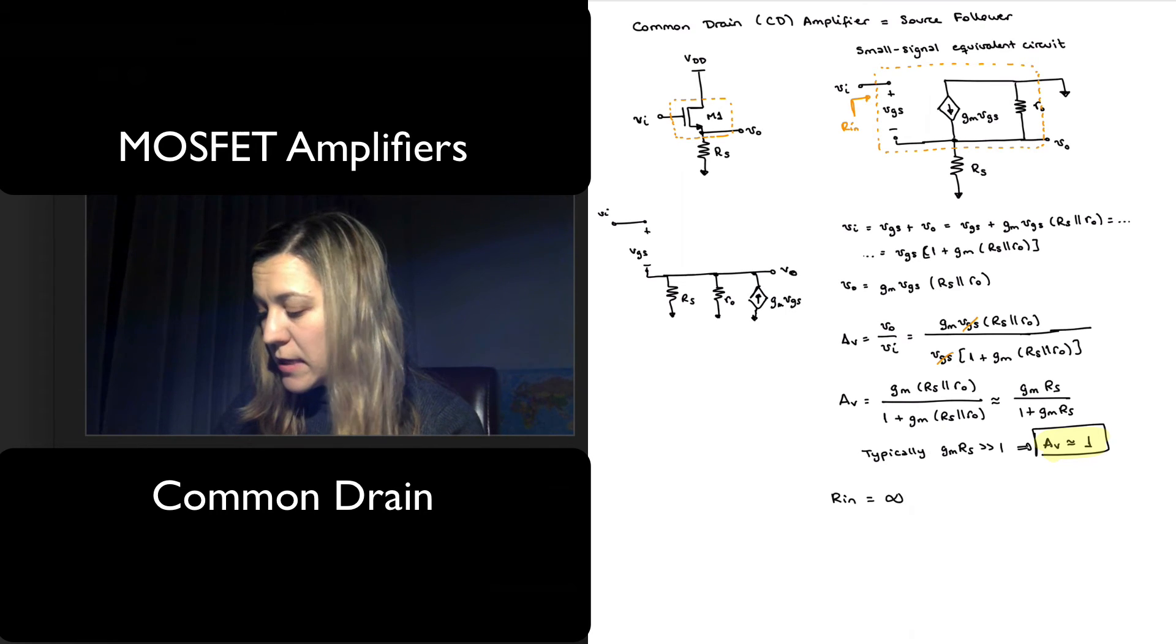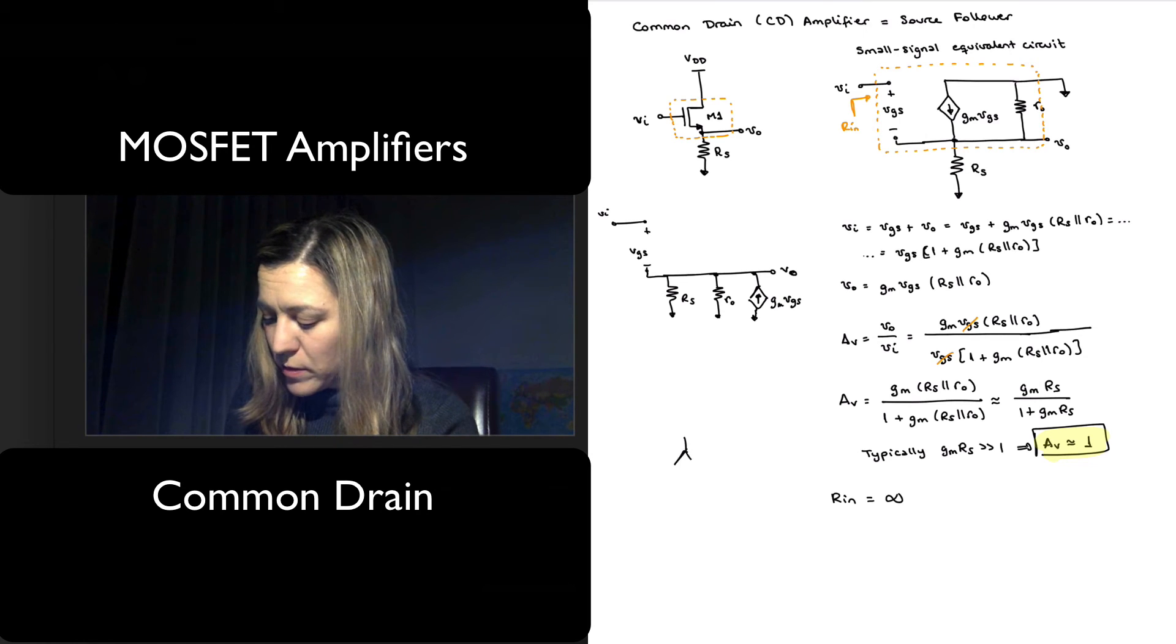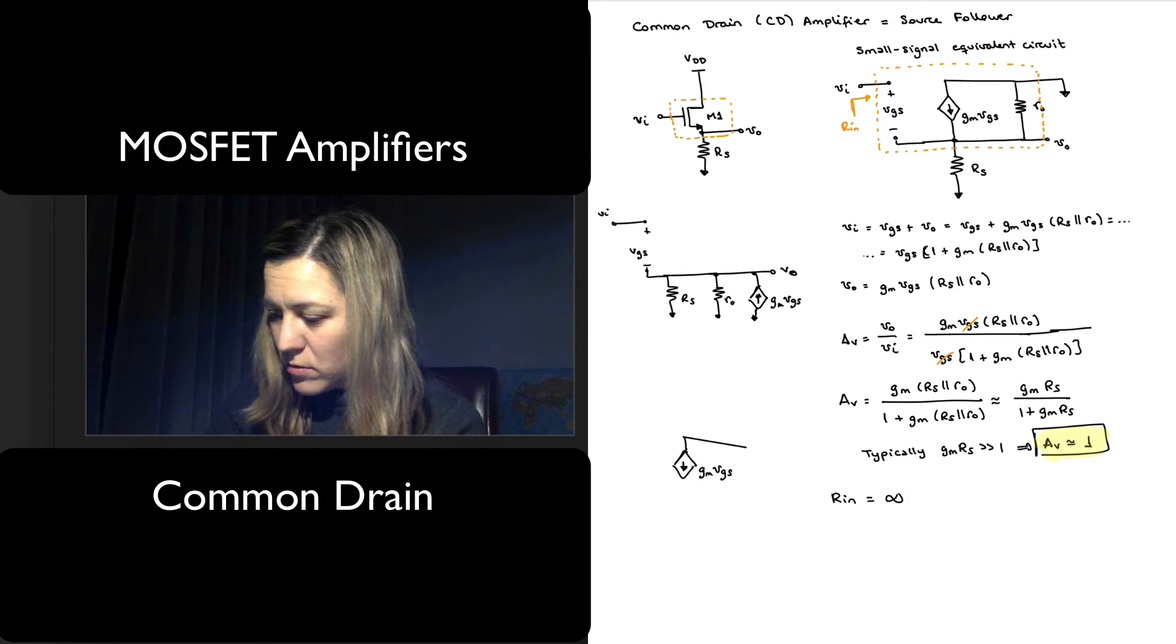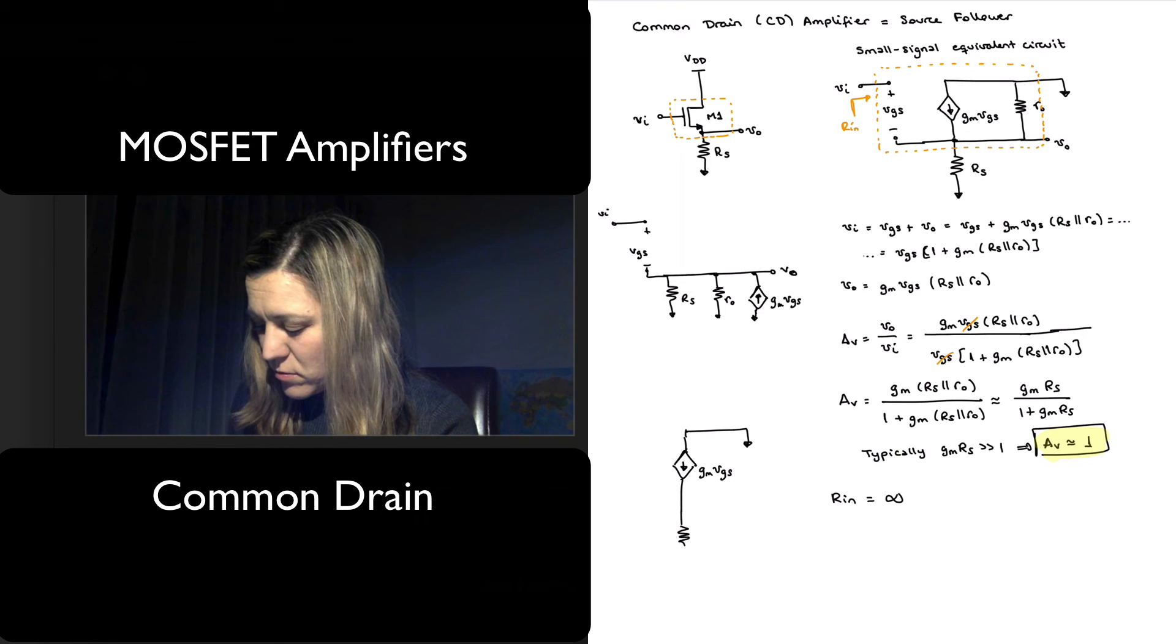but nonetheless it's easier to visualize if I apply my other model, my T-model, for the transistor. So basically, we have my current source g_m V_GS connected to ground. At the top, I'm going to ignore the r_out, and this is going to be 1 over g_m,